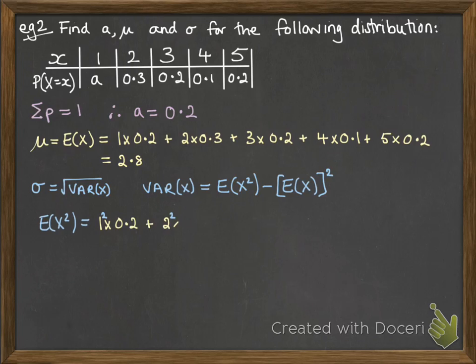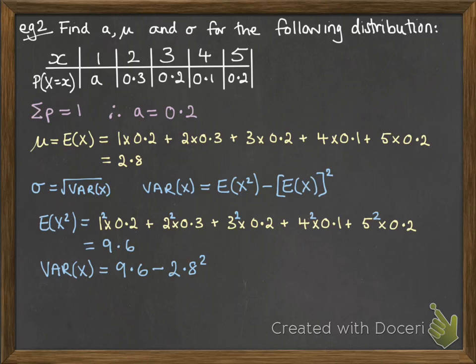So, e of x squared. Let's take that line from e of x and just copy it down, but we're going to square each of the x terms. So, the variance is that 9.6 minus mu, the e of x above, squared. To give us 1.76, therefore, sigma has to be the square root of 1.76. And that gives us 1.33.